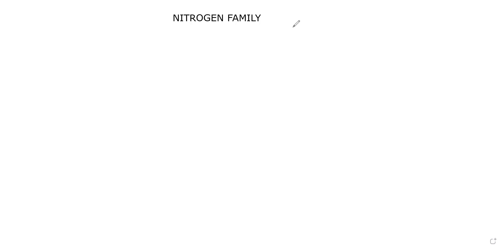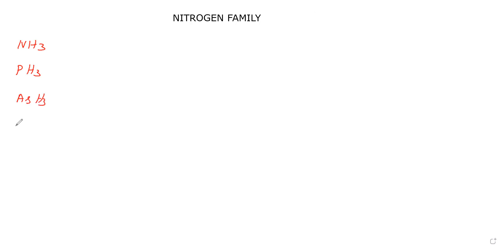Let us continue the nitrogen family. In the nitrogen family, we will take hydrides — specifically the hydrides of the fifth group. The hydrides are: ammonia, phosphine, arsine, stibine, and bismuthine.